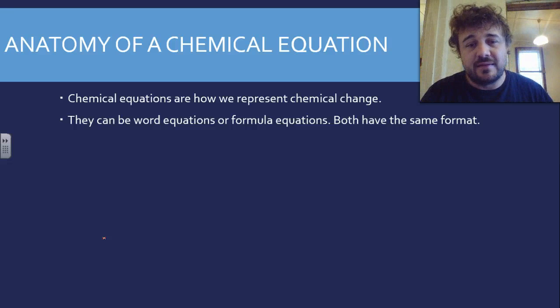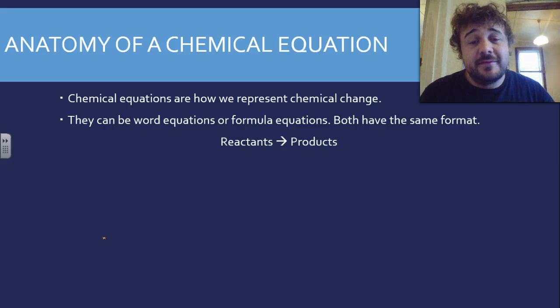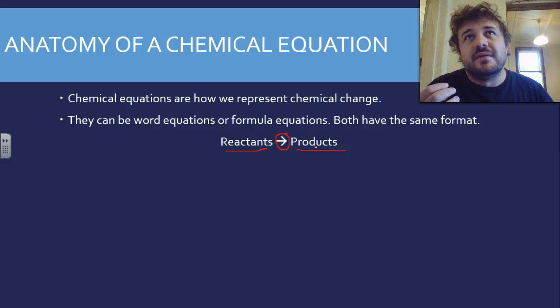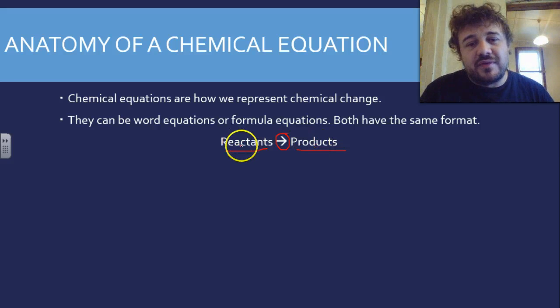Both have the exact same format - on the left hand side, reactants, and on the right hand side, products. This arrow means it's not an equal sign, it means 'goes into', so these two reactants go into this product.